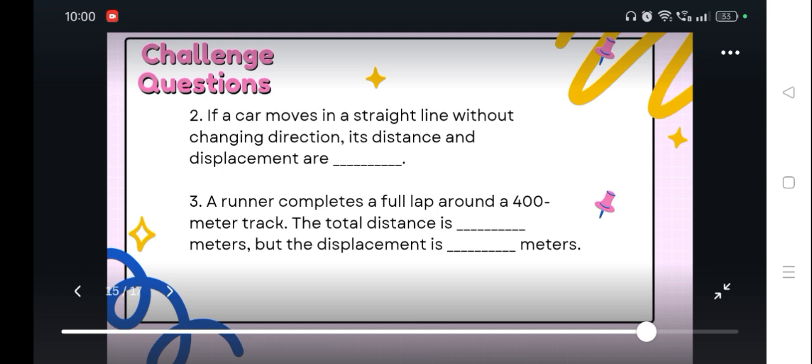Number 3: A runner completes a full lap around a 400-meter track. It's an oval that has a total distance of 400 meters. So the total distance is blank meters, but the displacement is blank meters.